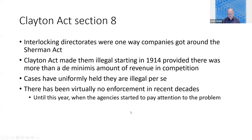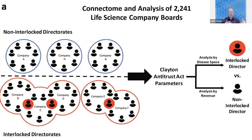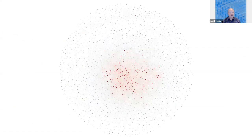We have a database that tries to figure out, for one particular industry — the life sciences industry — how big an overlap problem there is. We've got a connectome that shows the relationships and connections between over 2,000 publicly traded life science company boards, and we'll drill down into some more specific market structures in a moment. Each dot is a board member, and each line is a connected or interlocked board member — that is, a board member who's also serving on the board of another life science company.